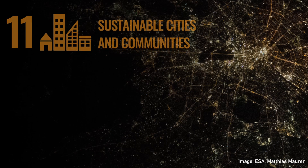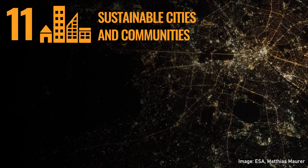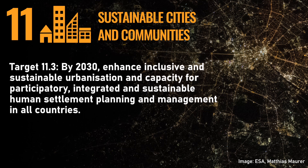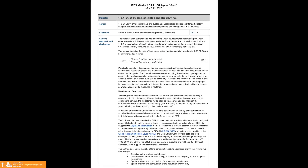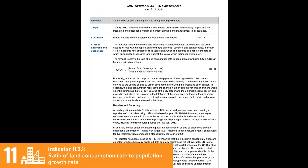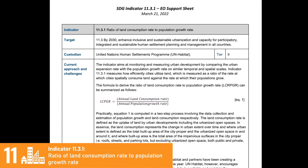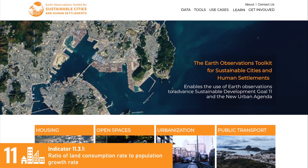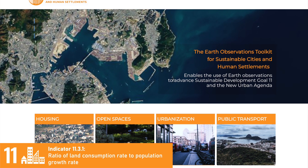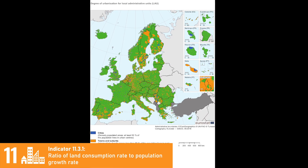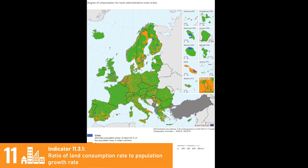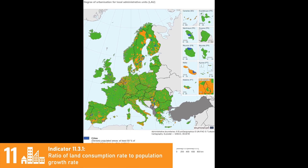SDG 11 focuses on sustainable cities and communities, with SEOS focusing on target 11.3, providing support for the Land Consumption and Population Growth Indicator. In March 2022, the team published the EO Support Sheet for this indicator. SEOS also contributed to the launch of the GEO EO Toolkit for Sustainable Cities and Human Settlements, and developed the Degree of Urbanisation as a method to delineate cities, urban and rural areas, as approved by the UN Statistical Commission for International Comparison.